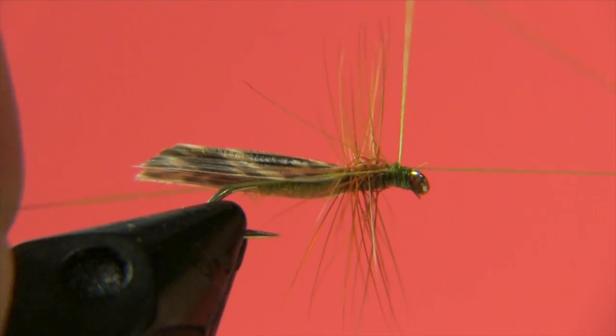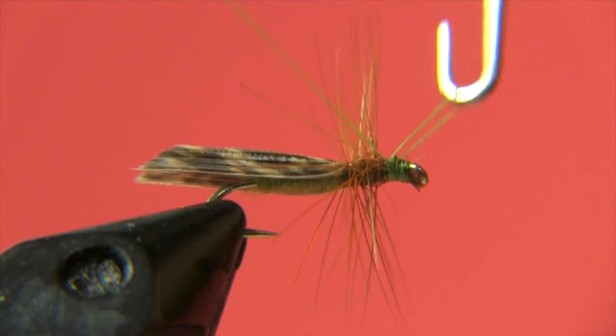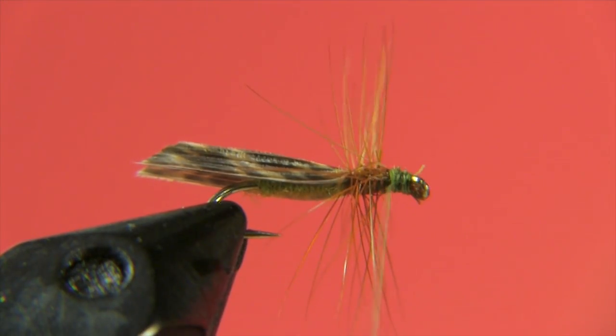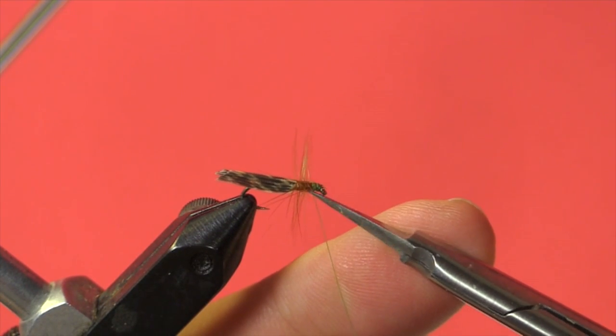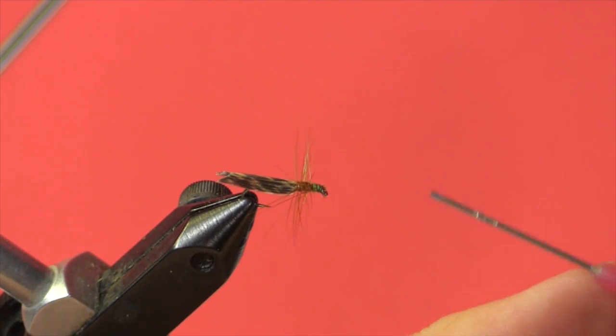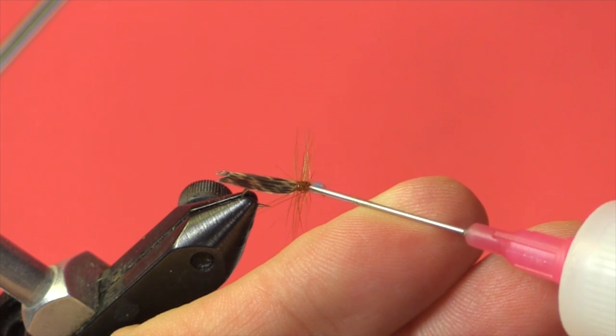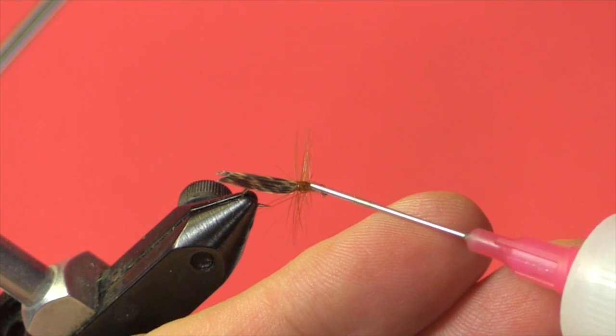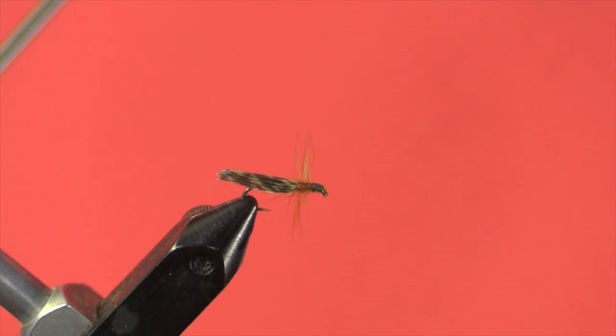And the last step is to put in our wet finish. We're ready for some head cement. I like to use a water base head cement. Just flow that in there. That'll seal it off. And there we go. We're ready to go fishing.